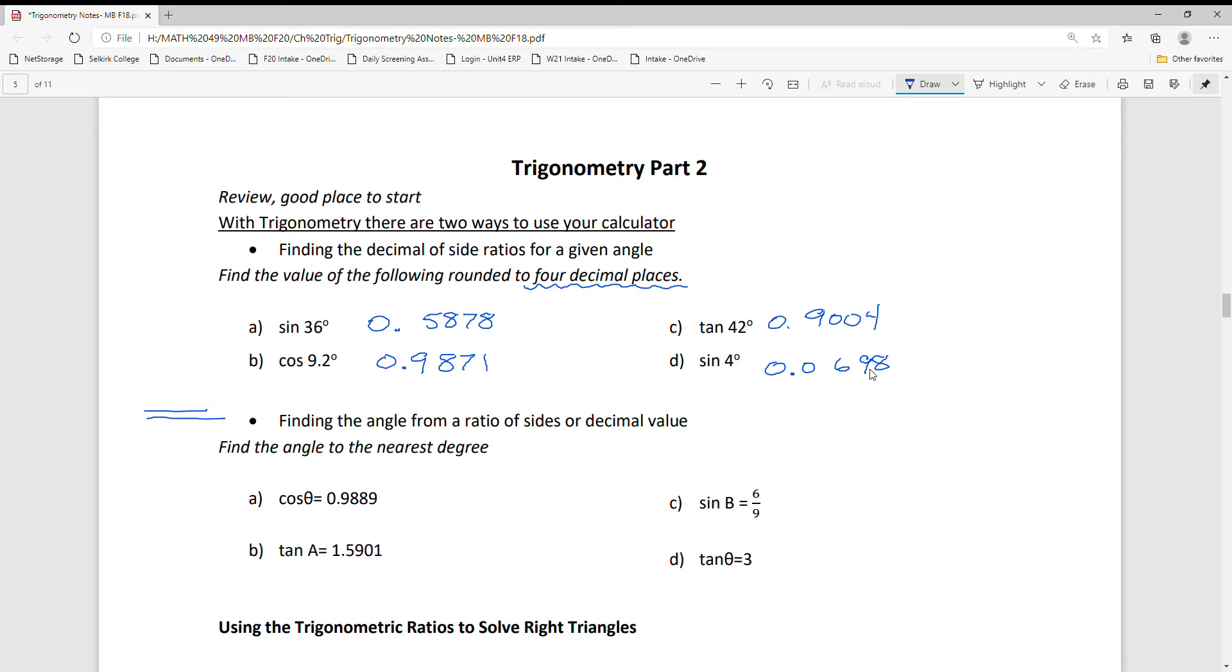We're going to use that application when we solve for a side in a triangle using trigonometry. The other skill is solving for an angle, and when we find the angle, we want to go to the nearest degree. These ones use the inverse trig function or second function button.